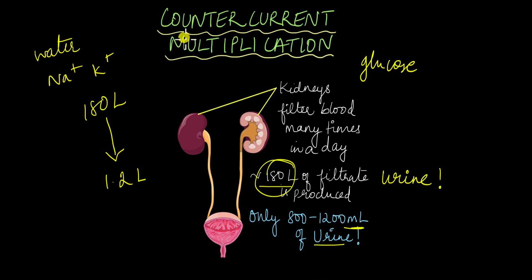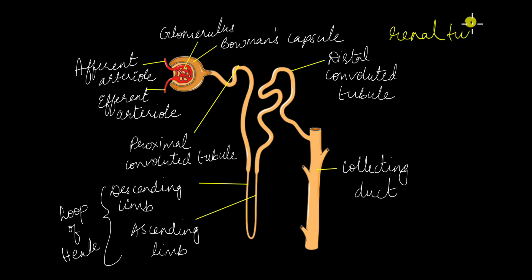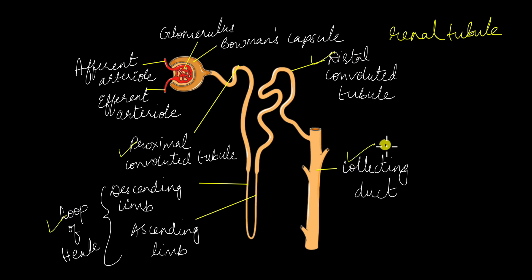What does this have to do with the topic of our video, which is counter-current multiplication? We already took a look at the different parts of the nephron in previous videos. In this video we are going to focus on the renal tubule part of the nephron, which includes the proximal convoluted tubule, the loop of Henle, the distal convoluted tubule, and the collecting duct.